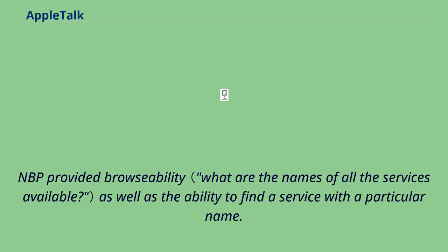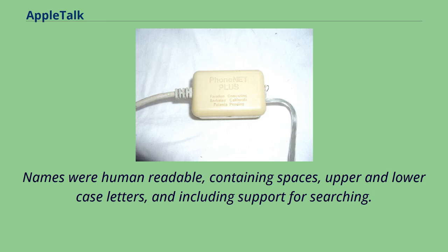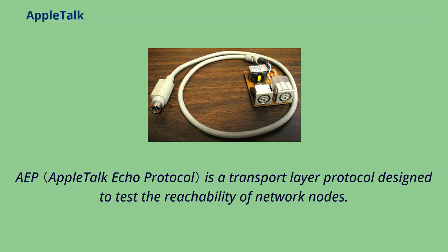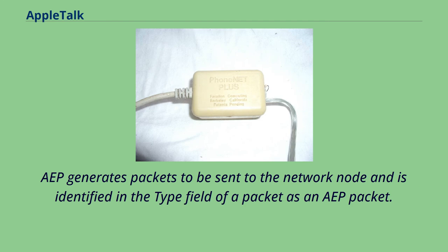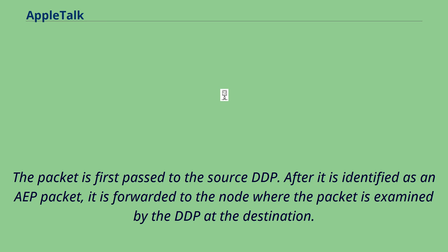EAP is a transport layer protocol designed to test the reachability of network nodes. EAP generates packets to be sent to the network node, identified in the type field of a packet as an EAP packet. The packet is first passed to the source DDP; after it is identified as an EAP packet, it is forwarded to the node where it is examined by the DDP at the destination. The packet is then copied and altered to create an EAP reply packet, which is returned to the source node.